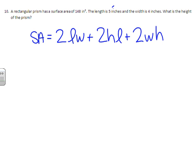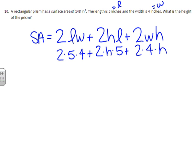It tells us the length is 5 and the width is 4. So anytime we see an L, I'm going to put a 5 there. And anytime I see a W for width, I'm going to put a 4 there. And everything else can come down, including the H for the variable. We don't know what the height is, that's what we're trying to solve for. We do, however, know what the surface area is. So we're going to write 148 equals, and I'll put units on at the end.